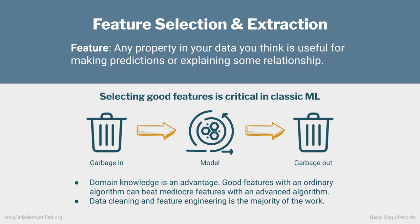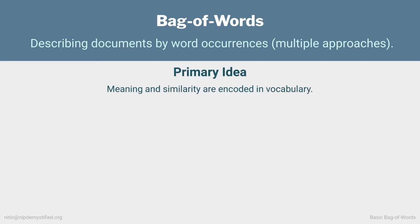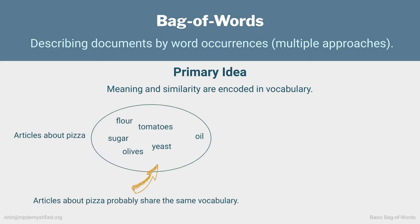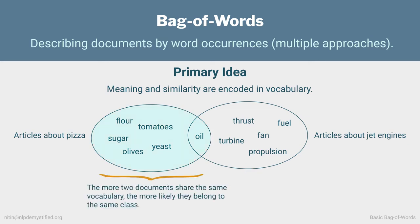So that's feature selection and extraction. With regards to NLP in particular, we want features which encode the semantics or meaning of a document, and ideally features which capture linguistic properties of the text. There are a variety of ways to do this — some merely capture the presence of a word, some capture relative frequencies of words, and yet other methods are capable of encoding some meaning of the words themselves. One simple but effective approach is bag of words, which is a general technique to describe documents by word presence. The primary idea is that meaning and similarity are encoded in vocabulary.